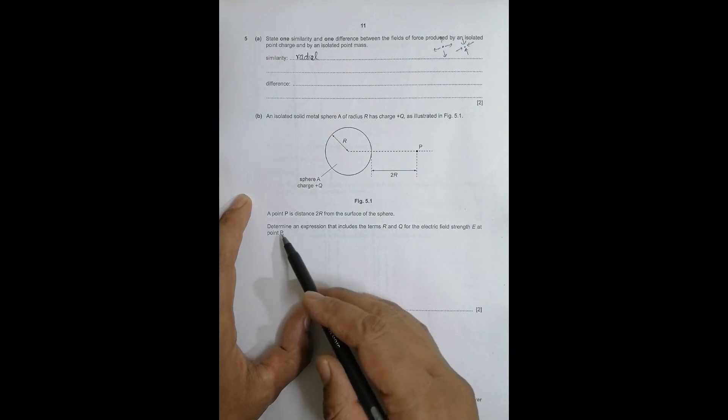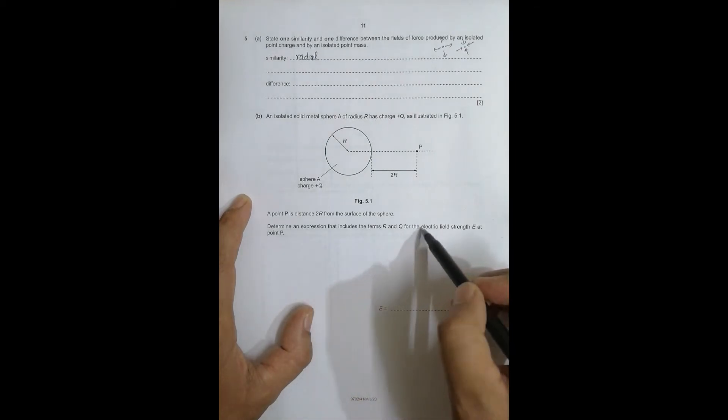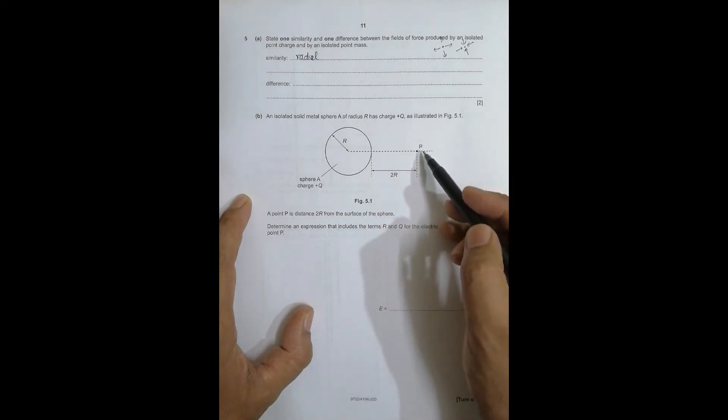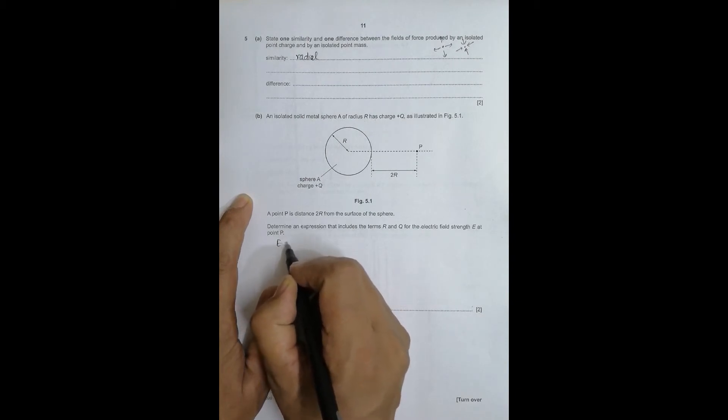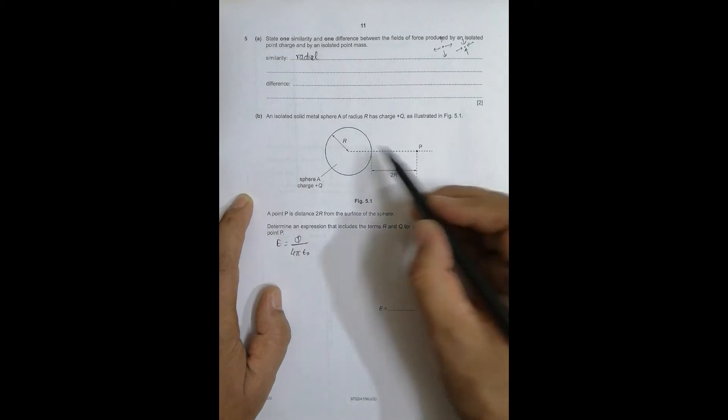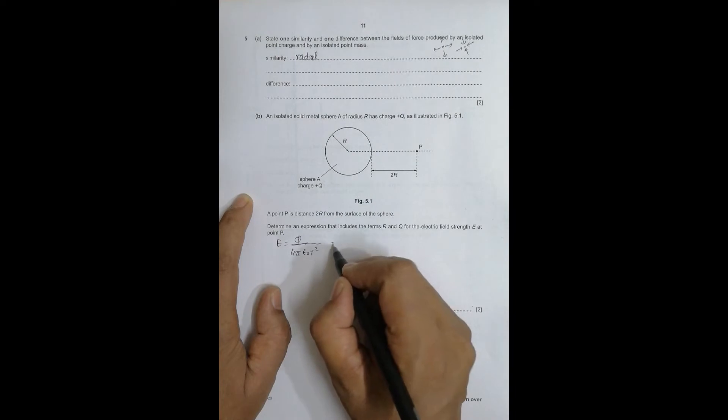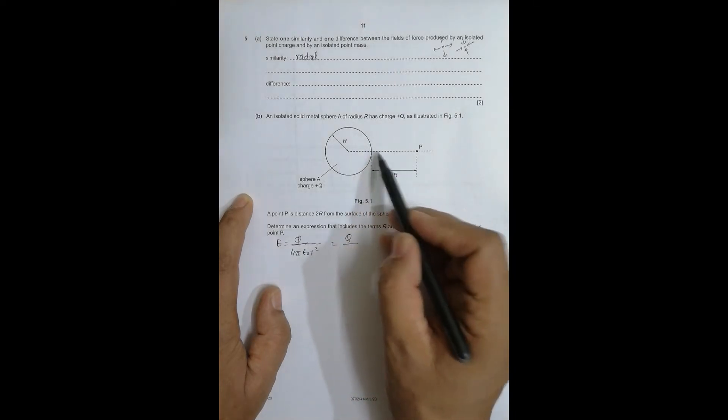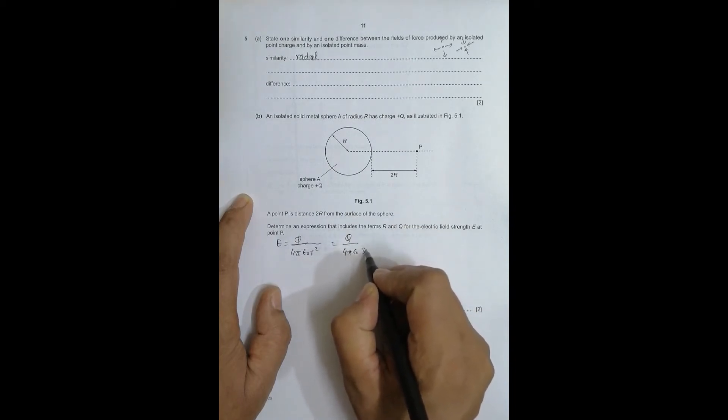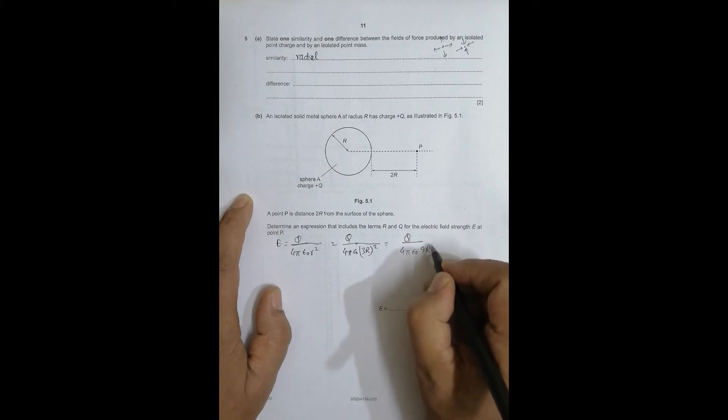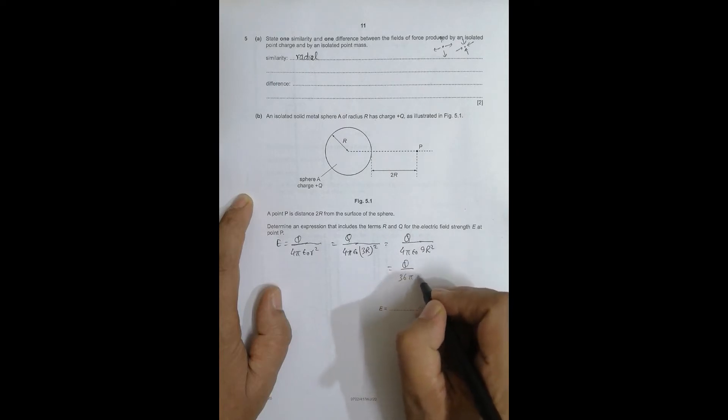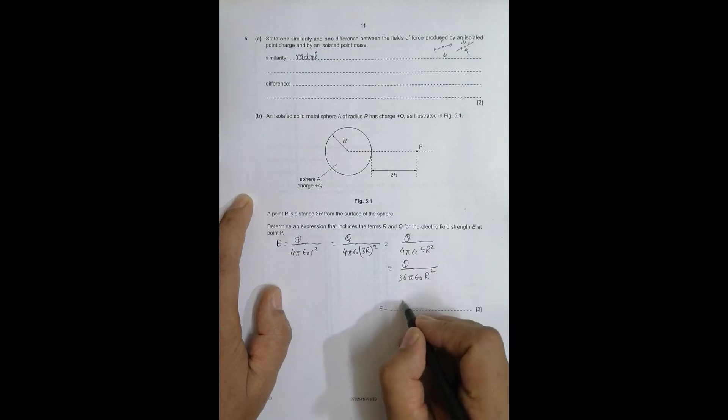Determine an expression that includes the terms R and Q for the electric field strength E at point P. The basic formula is electric field strength equals Q by 4πε₀R². But here the distance from the center is 2R + R = 3R. So it is Q divided by 4πε₀(3R)² = Q/(4πε₀ × 9R²) = Q/(36πε₀R²).